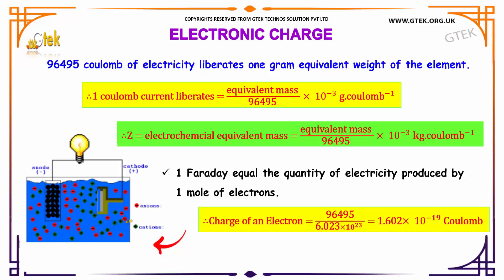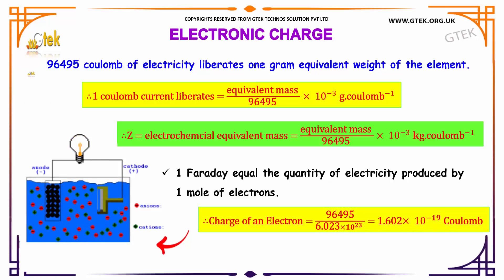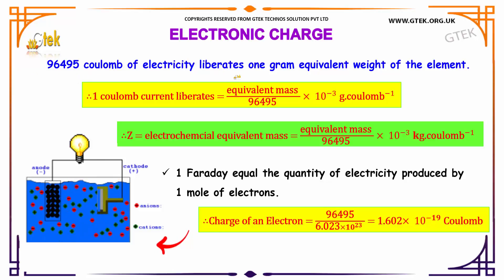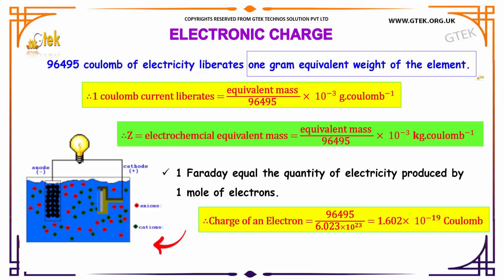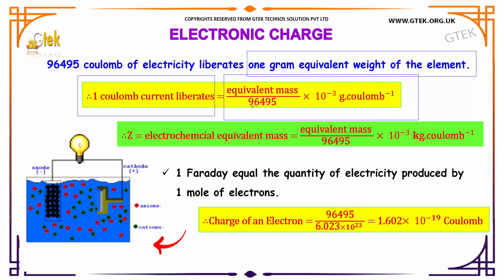Now let us discuss the electronic charge. Since 96,495 C of electricity liberates one gram equivalent weight of an element, one coulomb of current liberates an amount equal to: equivalent mass divided by 96,495, multiplied by 10⁻³ g C⁻¹.